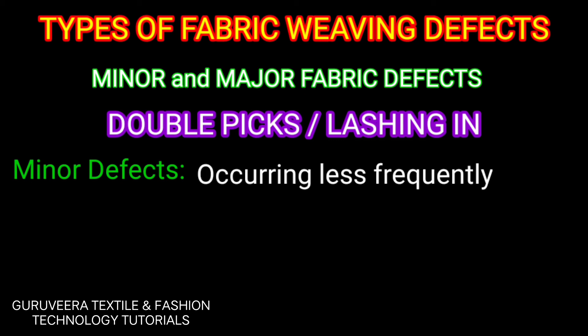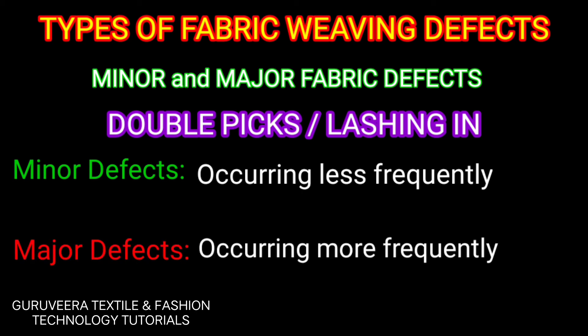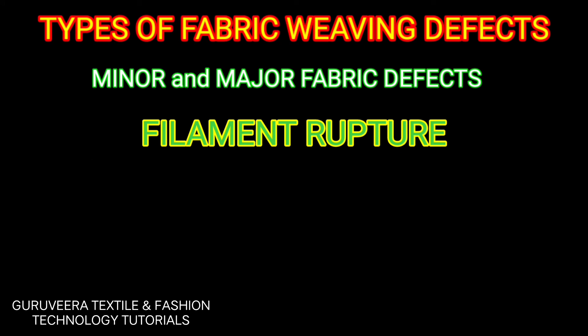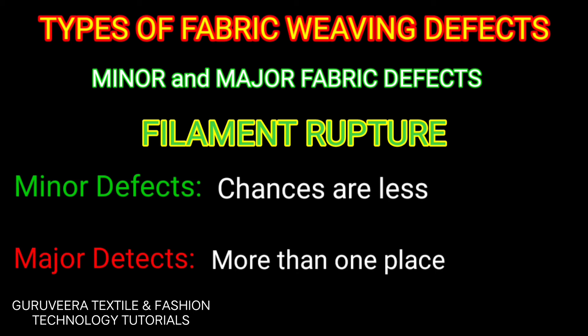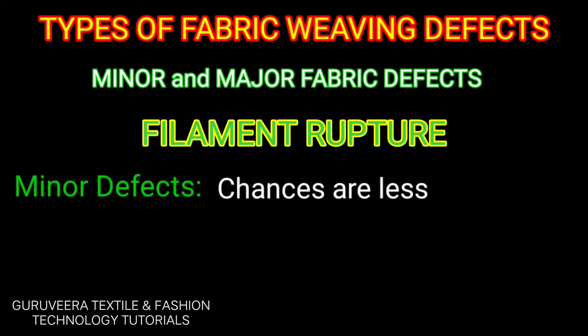Double picks are interlaced in looming. Occurring less frequently makes them minor defects, but occurring more frequently throughout the width and length of the fabric is considered a major defect. Filament rupture is mainly seen in synthetic fabrics like polyester and nylon. More than one place of thread or filament fracture or rupture is considered a major defect.